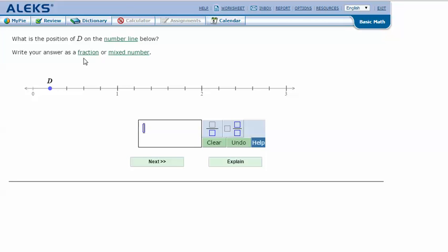What is the position of D on the number line below? Write your answer as a fraction or mixed number. One, two, three, four, five. So these are in fifths. Zero, one-fifth, two-fifths, three-fifths, four-fifths, one. So this is at one-fifth.